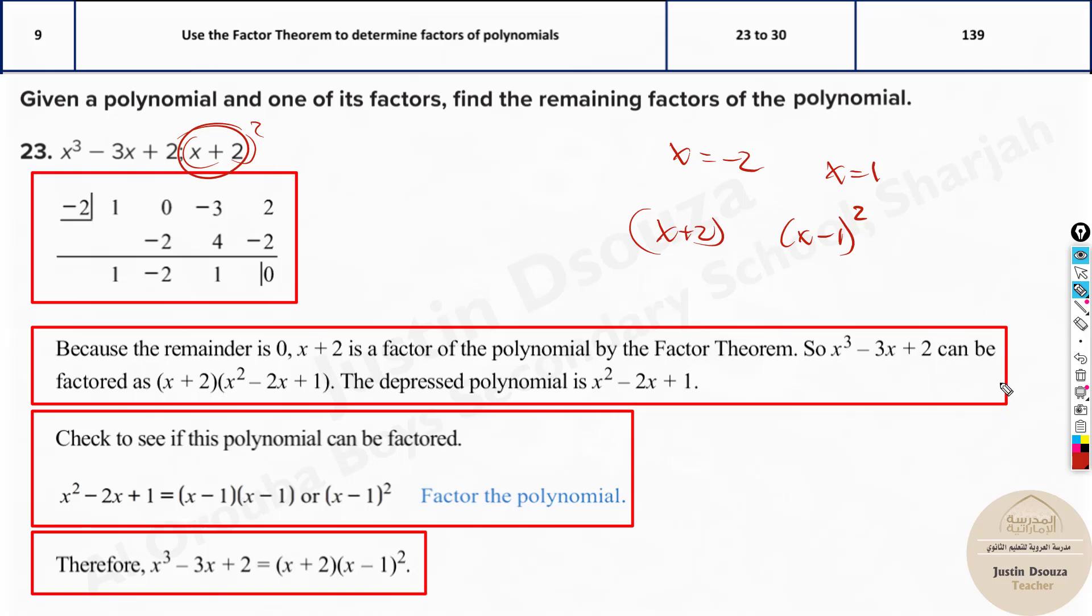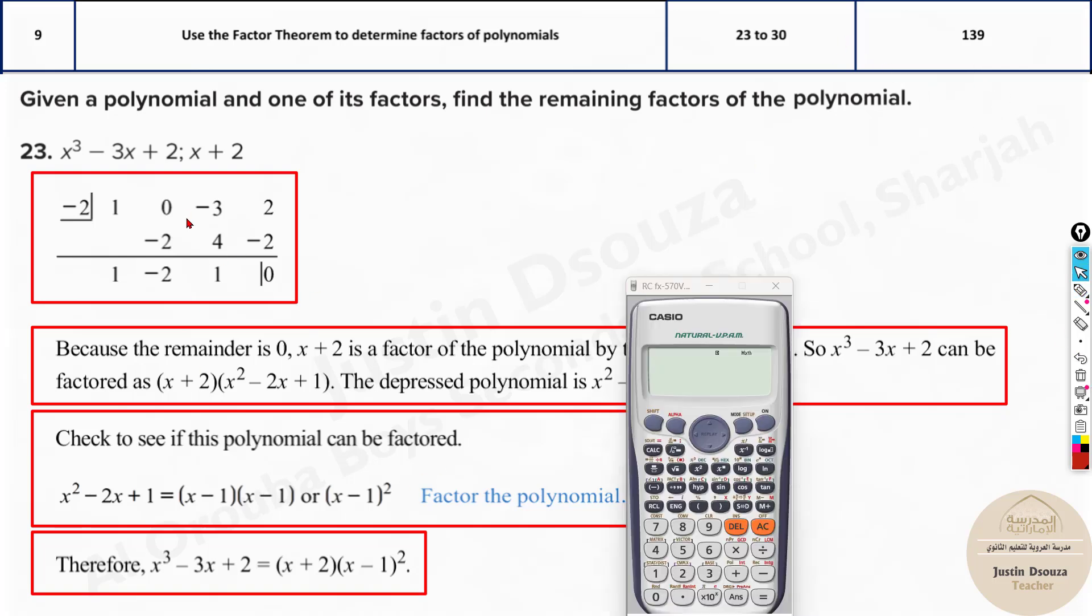Now, this is the final answer. The other way to find this out is you will have four options. In the four options, what you need to do is find the factors. You will have about four answers like that. You need to assume an x value.